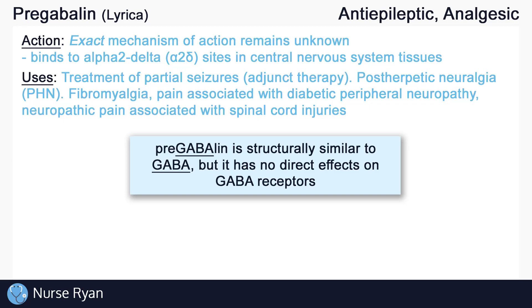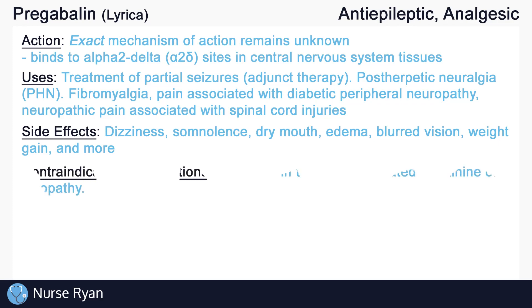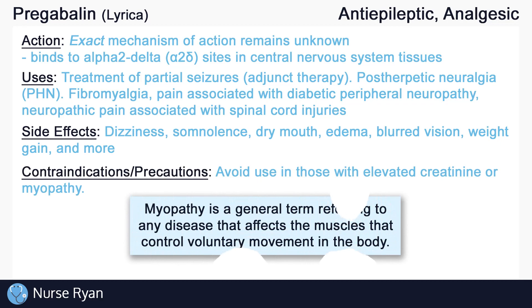Some of pregabalin's side effects include dizziness, somnolence, dry mouth, edema, blurred vision, and weight gain, among others. Avoid use of pregabalin in those with elevated creatinine levels or in those with myopathy.